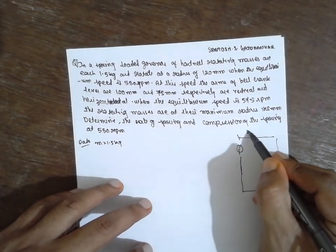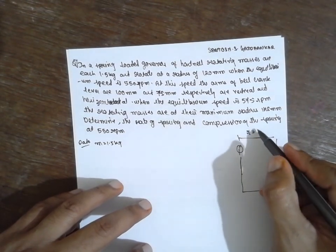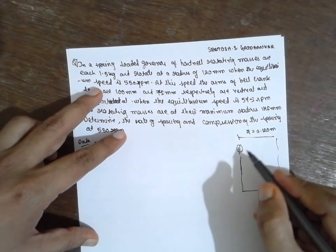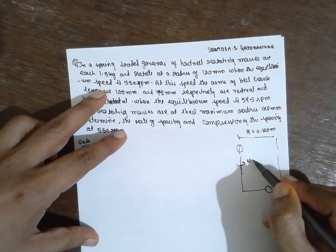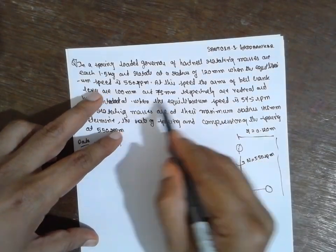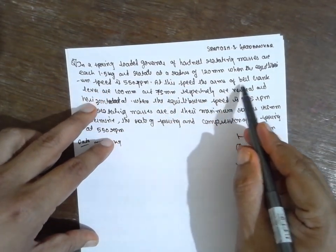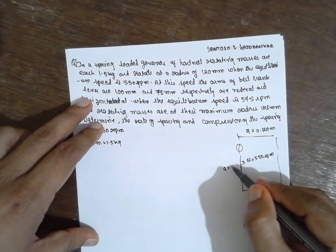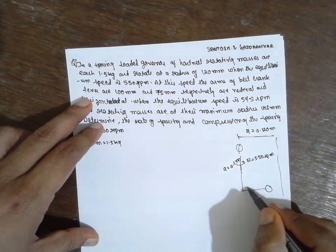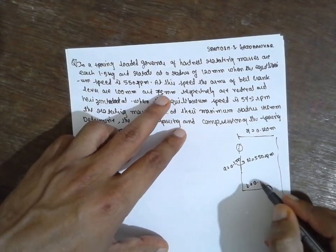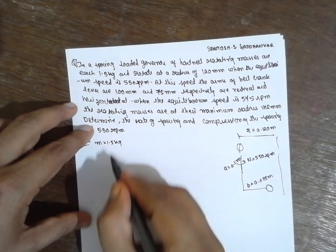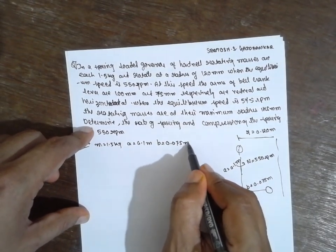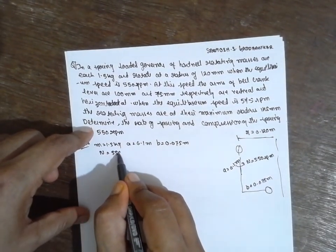The radius R is equal to 120 mm, which in meters is 0.120 meter. The speed N is equal to 550 RPM. At this speed, the arm of the bell crank lever: A is given as 100 mm, which is 0.1 meter, and B is given as 0.075 meter. So A equals 0.1 m, B equals 0.075 m, and N equals 550 RPM.